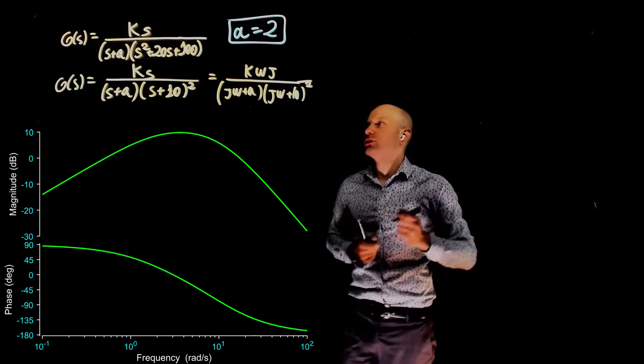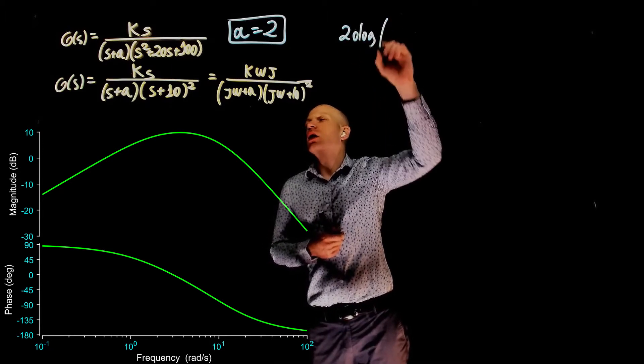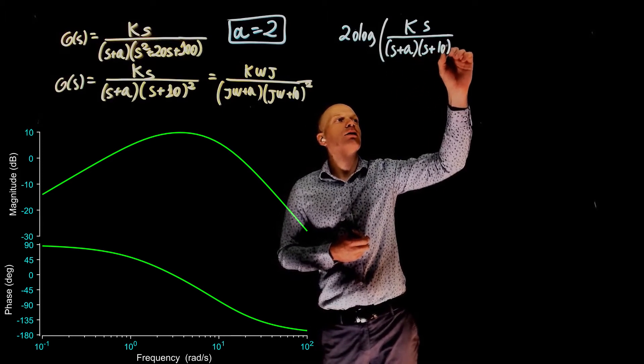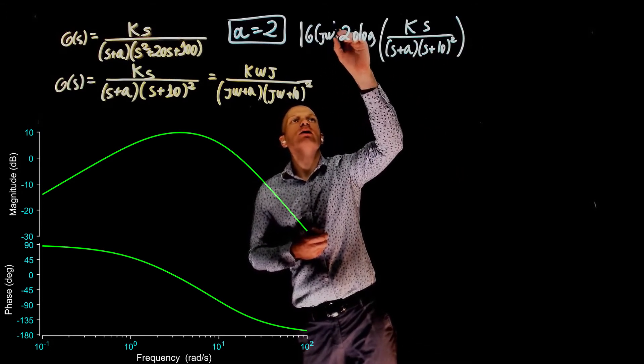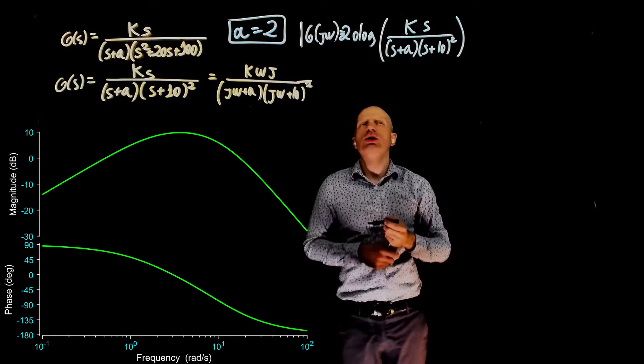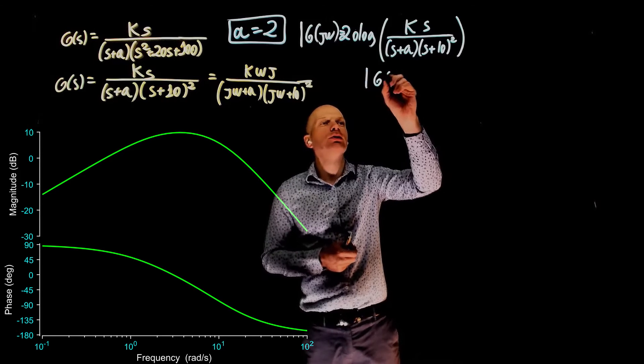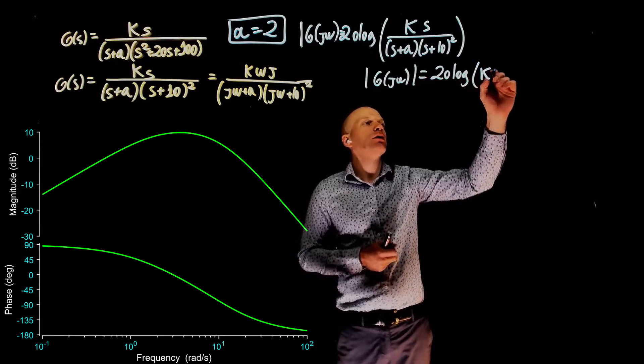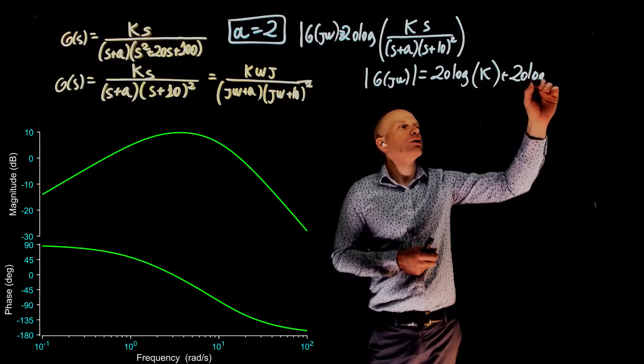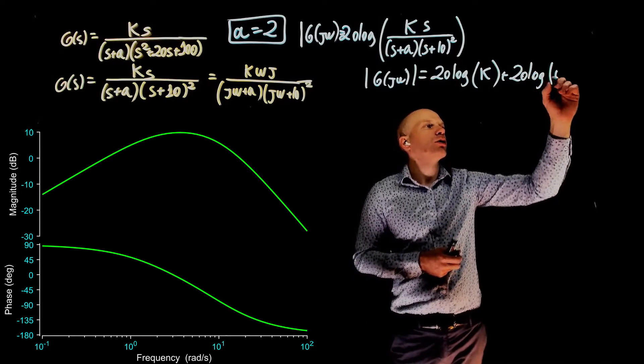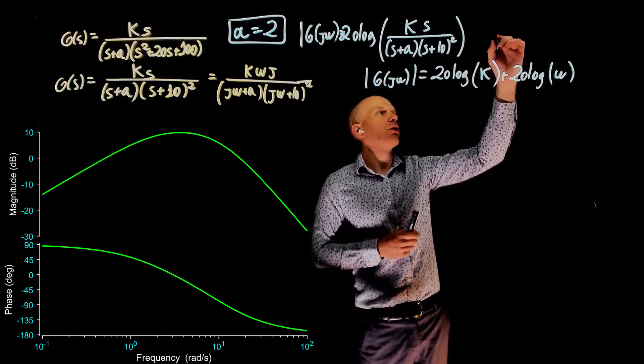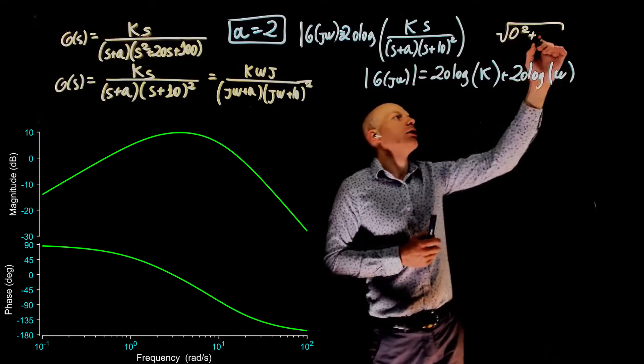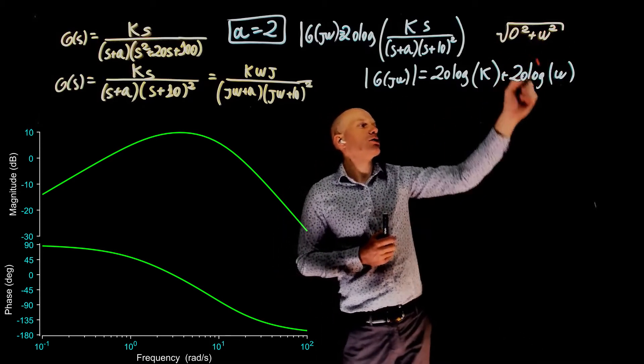What is the magnitude of this transfer function? We can take 20 log of ks over s plus a, times s plus 10 squared. This is the magnitude of g j omega. S equals to j omega. We now have the magnitude, 20 log of k plus 20 log of s, which is simply omega, or simply 20 log of square root of real part squared, which is zero, plus imaginary part squared. That is when s is j omega, it's simply omega, so omega squared, the square root cancels with this square, 20 log of omega.